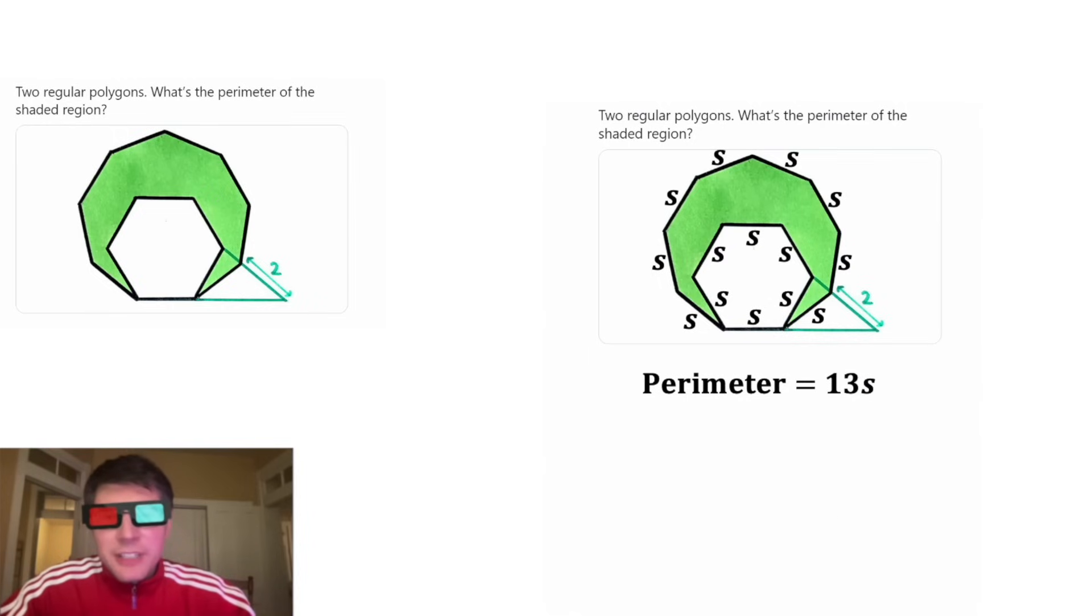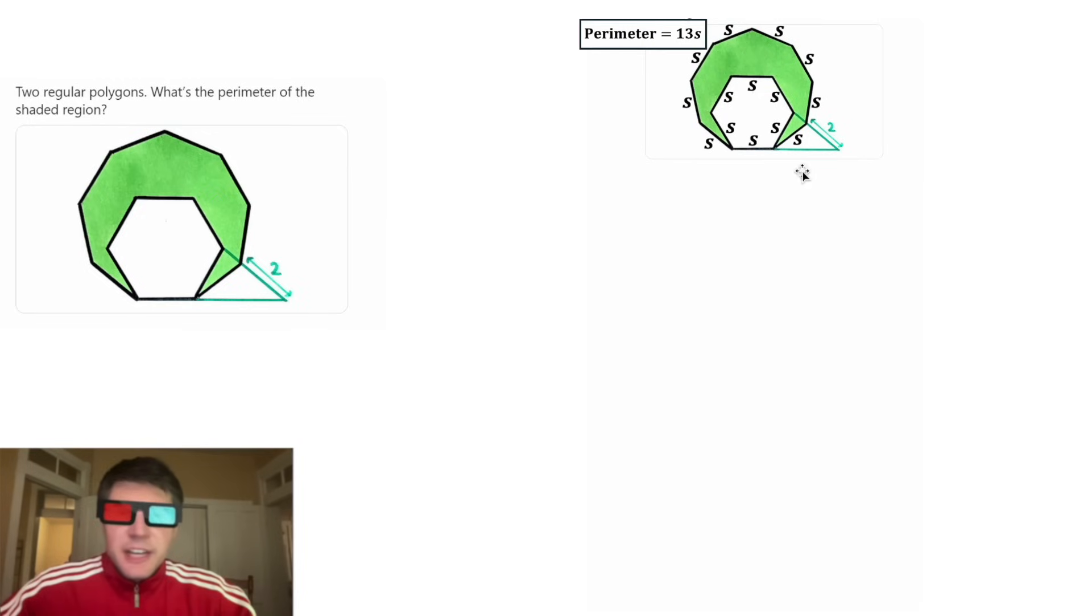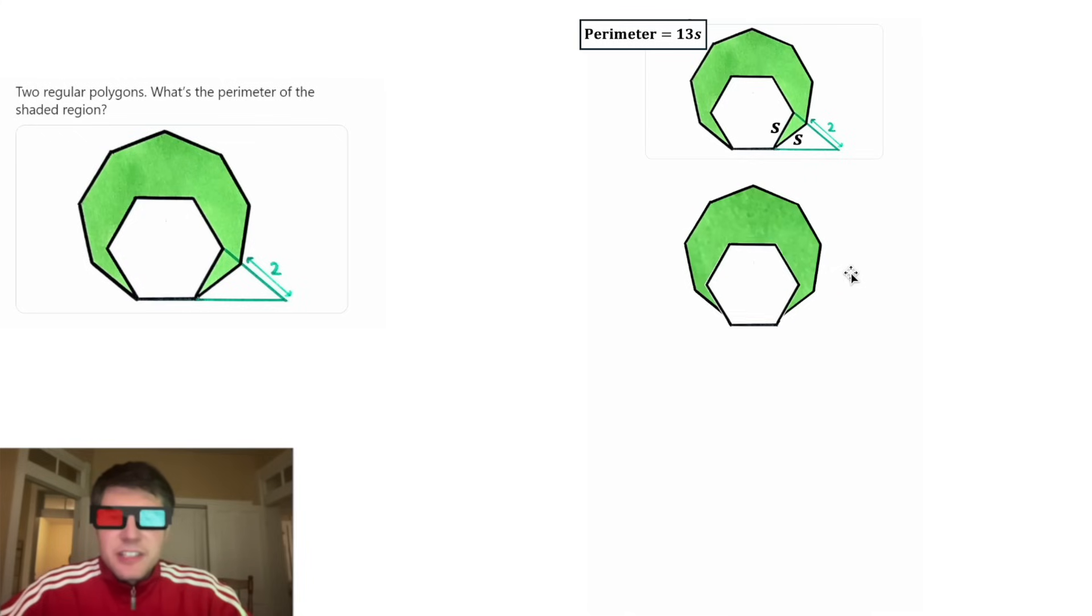This looks important, let's put a box around it. Next let's get rid of all the S's except these two. Now let's copy this down here. Let's get rid of this label right here and let's separate our two regular polygons.